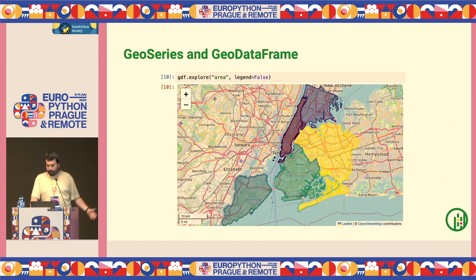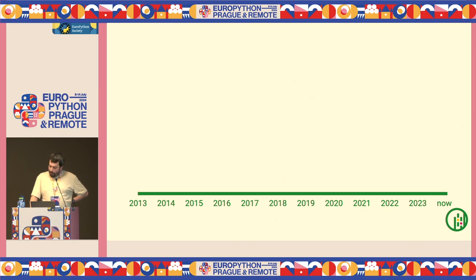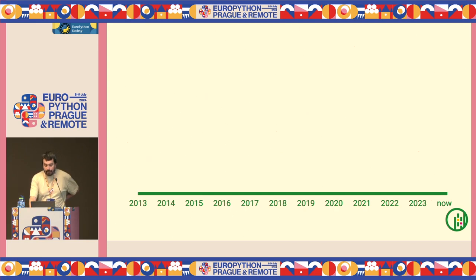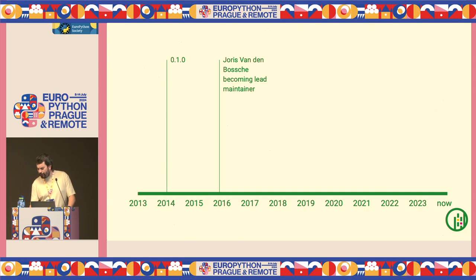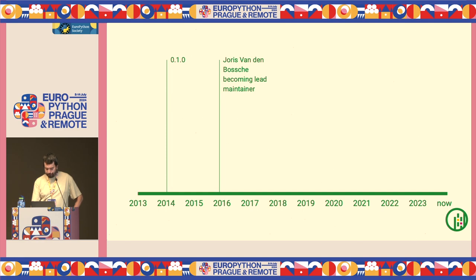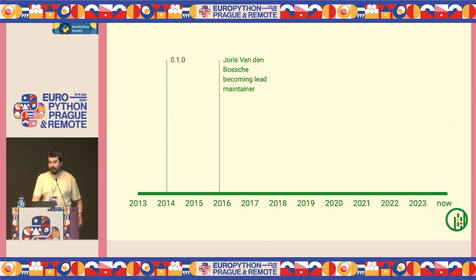We started at SciPy 2013 — I wasn't part of the team back then; actually no one who is part of the team right now was part of the team back then. We started with a workshop and then the first release in 2014. In 2016, Kelsey Jordal changed jobs and Joris van den Bossche became the lead maintainer. He's still one of the maintainers today, and a key person within the geospatial ecosystem. He's also one of the maintainers of Pandas.